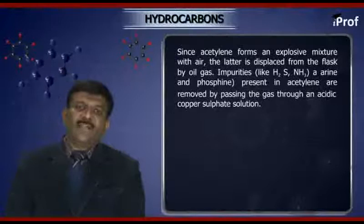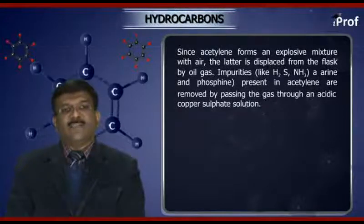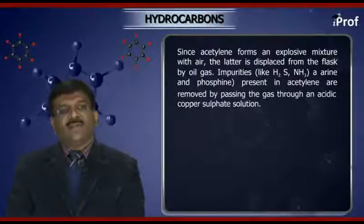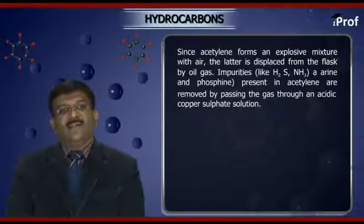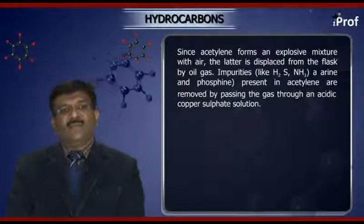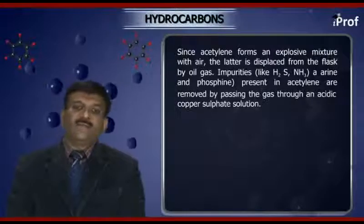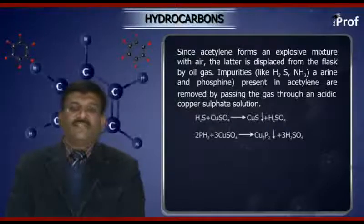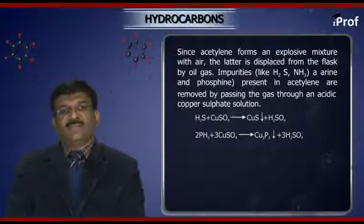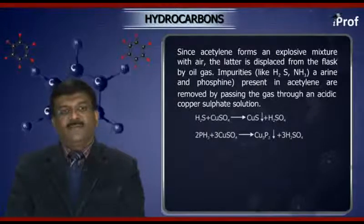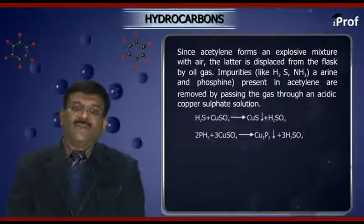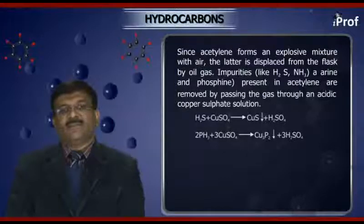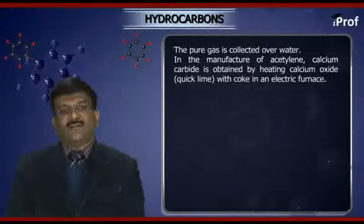Since acetylene forms an explosive mixture with air, the gas is displaced from the flask by oil gas. Impurities like H2S, ammonia, AsH3, arsine, and phosphine present in acetylene are removed by passing the gas through an acidic copper sulfate solution. H2S reacts with CuSO4 to give CuS precipitate and H2SO4. Phosphine (PH3) reacts with copper sulfate to form Cu3P2, which also precipitates along with the formation of sulfuric acid. The pure gas is then collected over water.